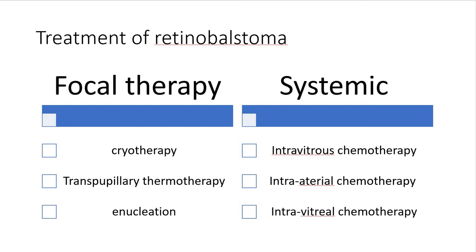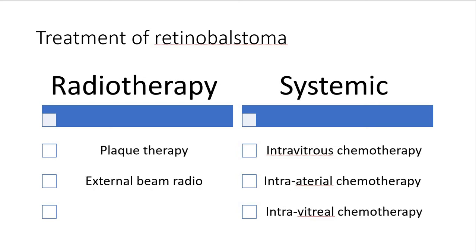We have three modalities of treatment: focal therapy, systemic therapy, and radiotherapy. Focal therapy includes cryotherapy, laser therapy — such as transpupillary thermotherapy — and enucleation, which is also regarded as focal therapy by some. Systemic therapy is either chemotherapy — given as intravitreal, intraarterial, or intravenous chemotherapy — as well as subtenon chemotherapy for focal tumors. Radiotherapy includes plaque therapy and external beam.